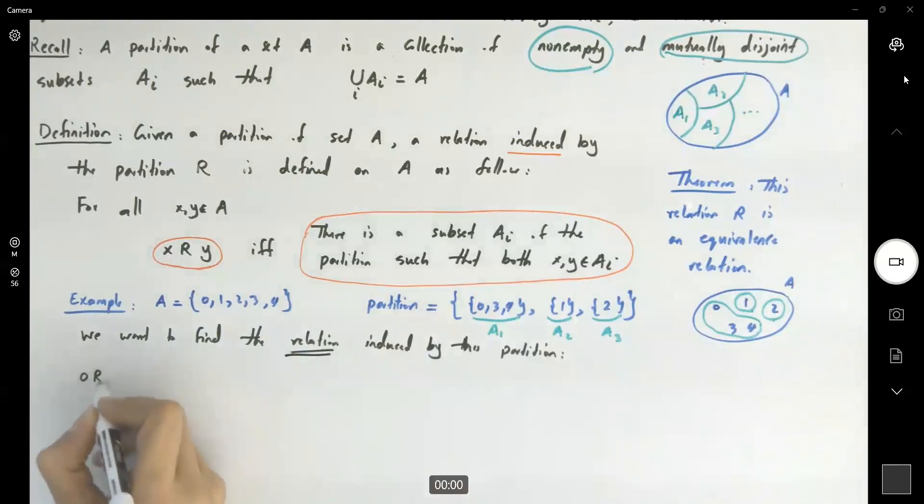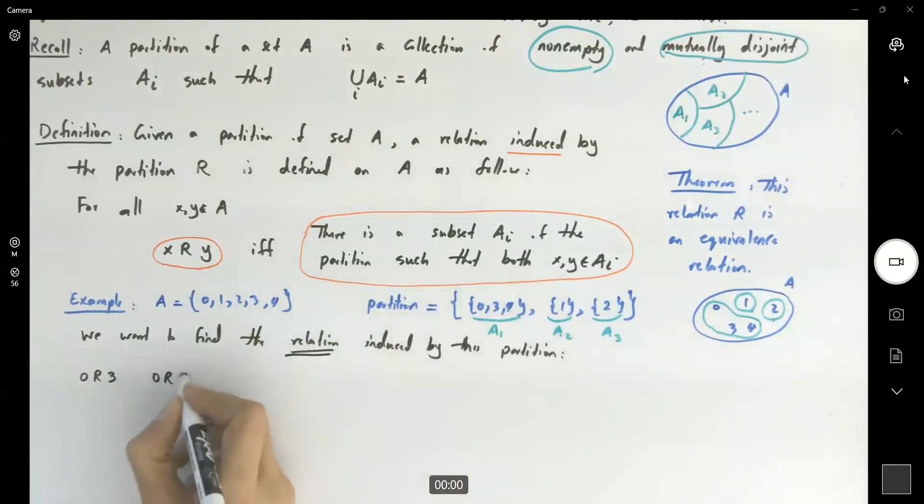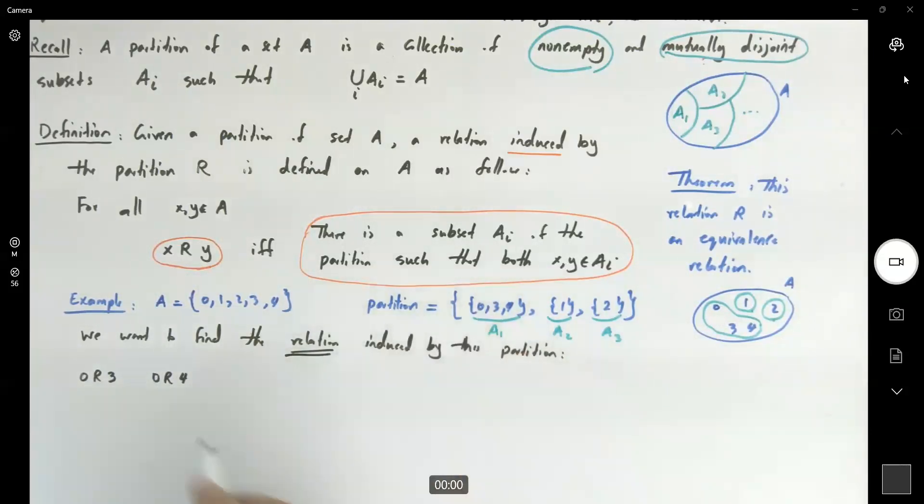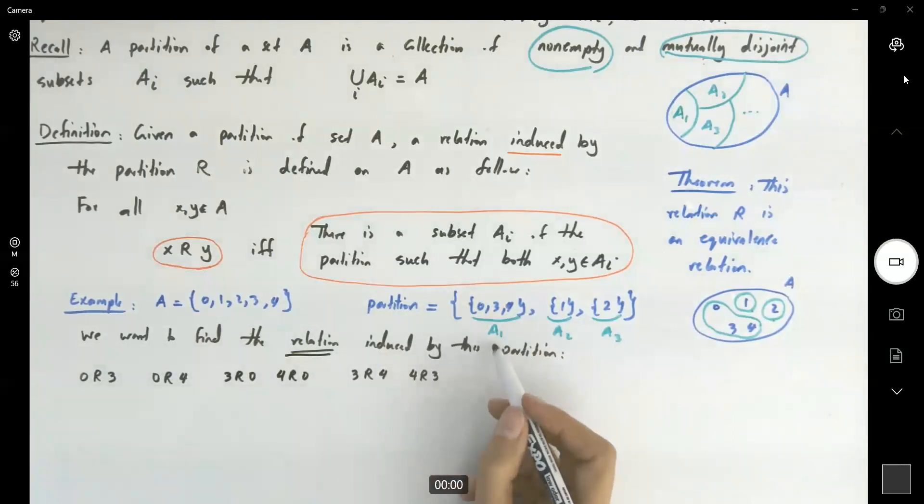Remember how we defined the ordered pairs? We say that X is related to Y if and only if they belong to one partition. So, 0 is related to 0, is related to 3, 0 is related to 4. That's obvious. 3 is related to 0, 4 is related to 0, 3 is related to 4, 4 is related to 3. They are all in the same partition. But 0 is not related to 1, 1 is not related to 0, 0 is not related to 2, 2 is not related to 0 and so on.